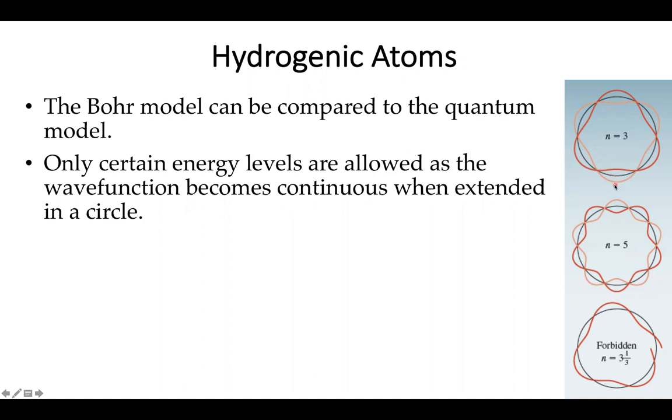If I have a certain number of nodes moving around the nucleus, say for example three integer wavelengths going around the nucleus, this is n equals 3. If I have a wavelength that is slightly higher or slightly smaller, they don't link up quite so well and there isn't a good way to have these discrete energy levels.